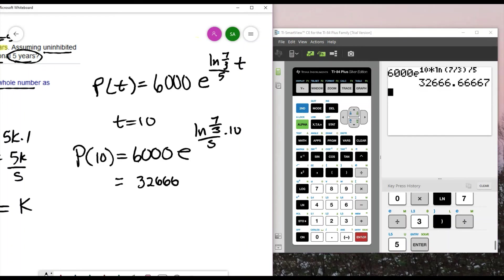That gives me 32,666.6. We want to round to the nearest whole number. That's 32,667.